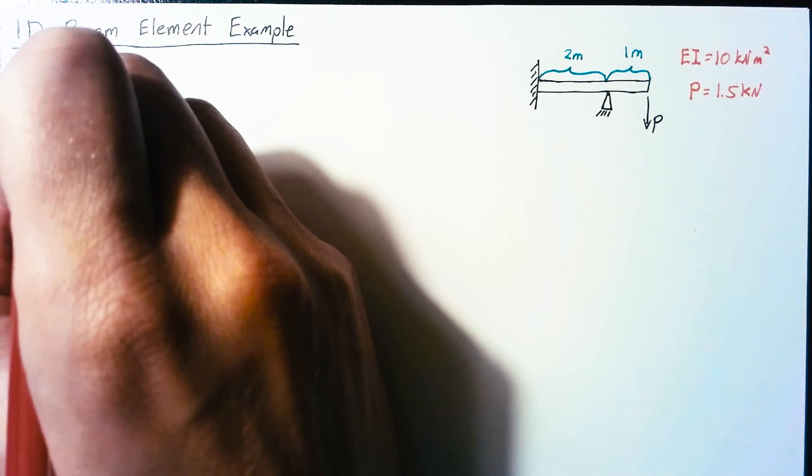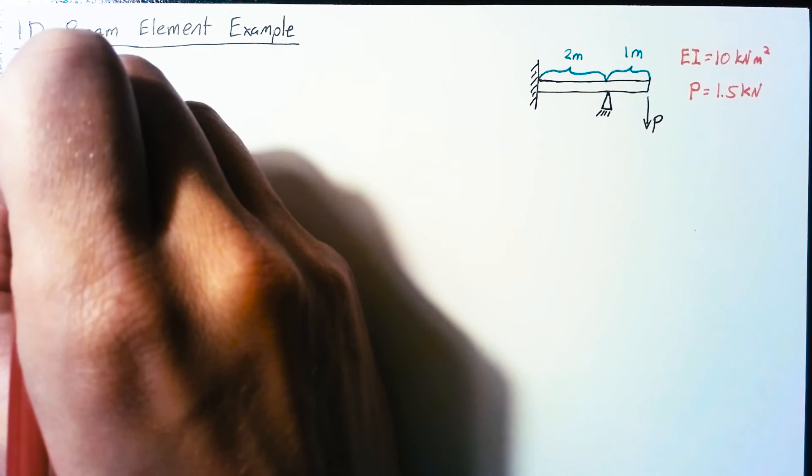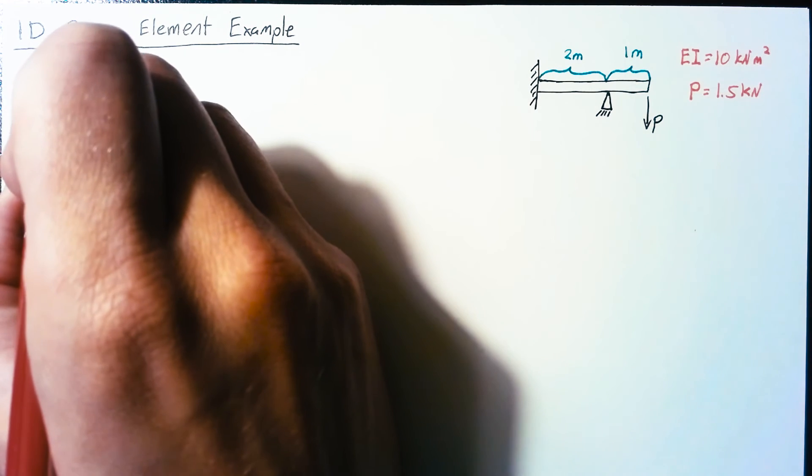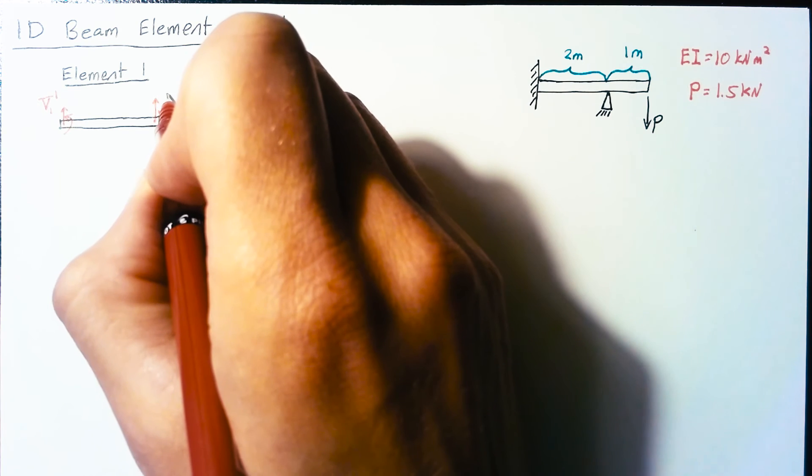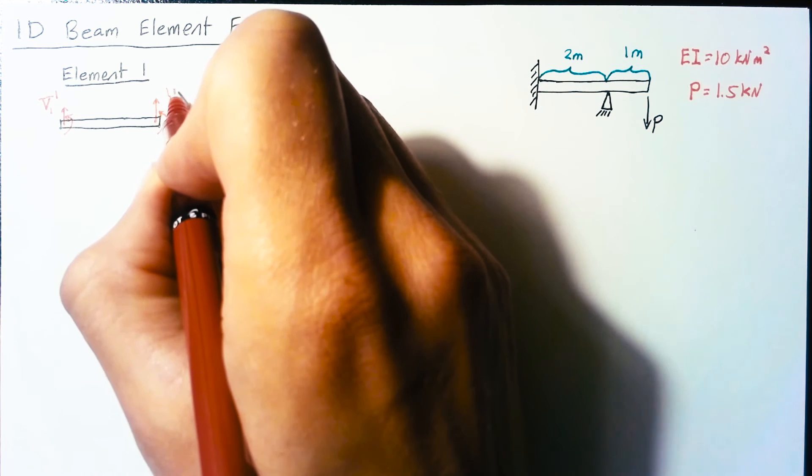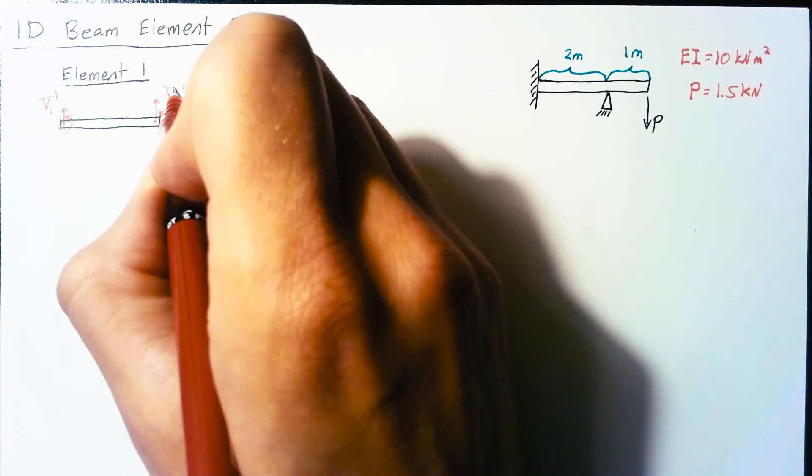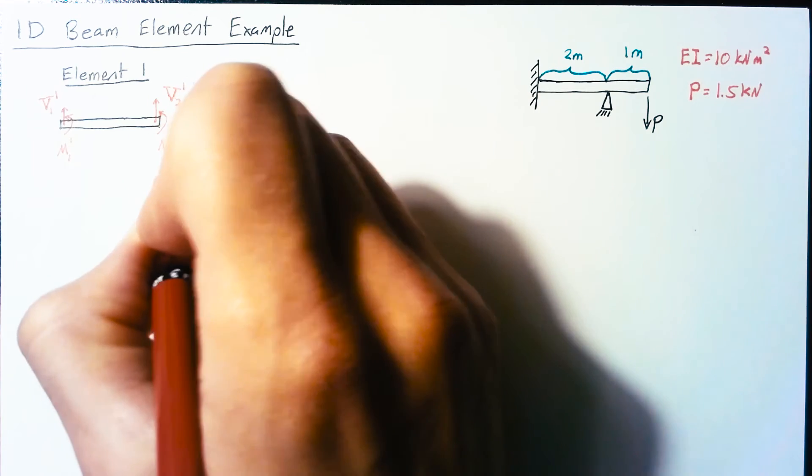We can label our forces and moments for both sides of this element. The force on the left we'll call the shear force on node one on element one, and on the right it's the shear force on node two of element one.